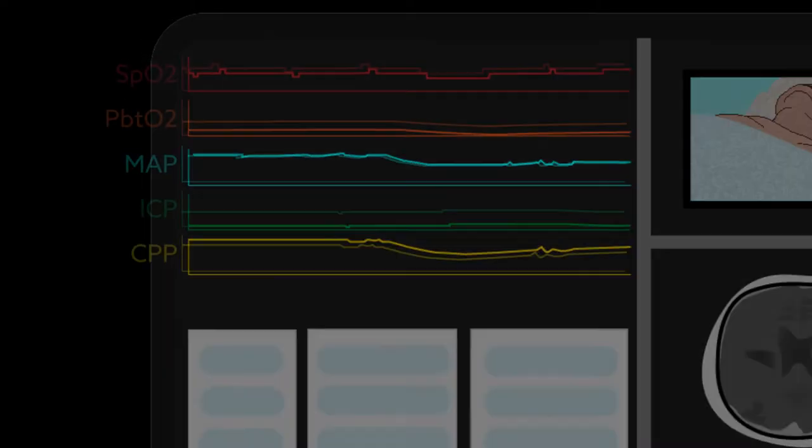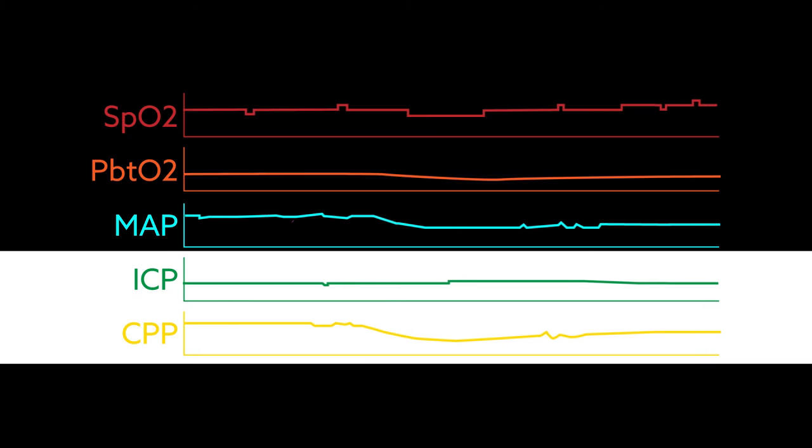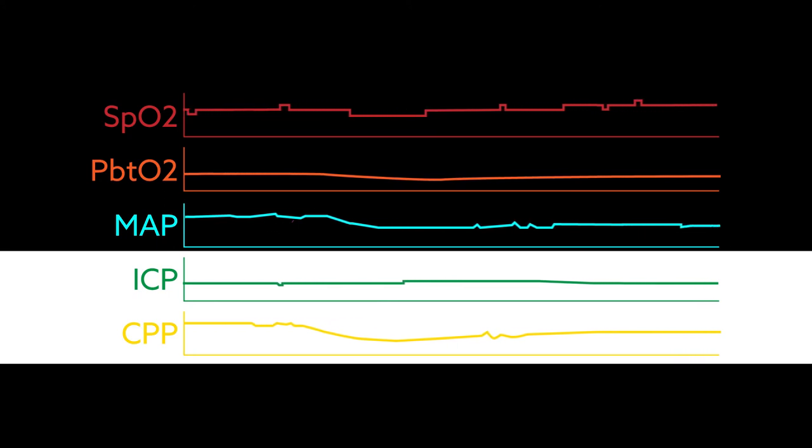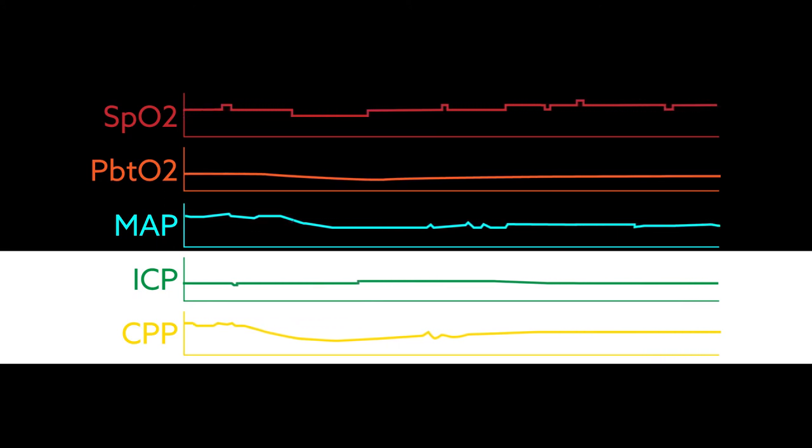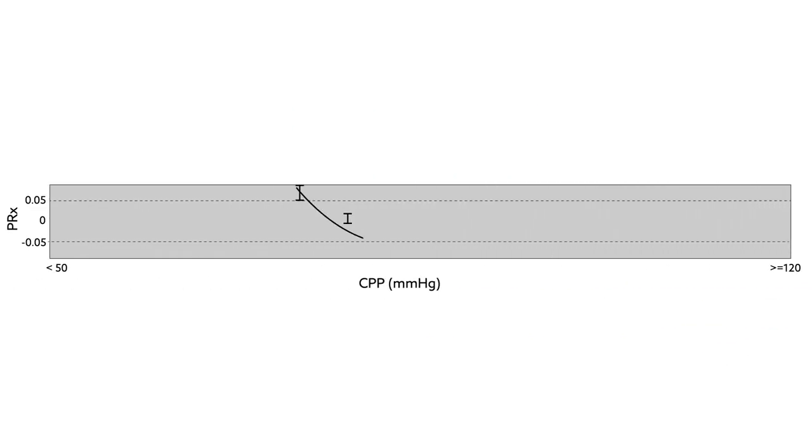Monitoring of intracranial pressure and cerebral perfusion pressure is a routine component of traumatic brain injury management in many centers. Keeping a patient's cerebral perfusion pressure within an optimal range, rather than using a generic threshold,